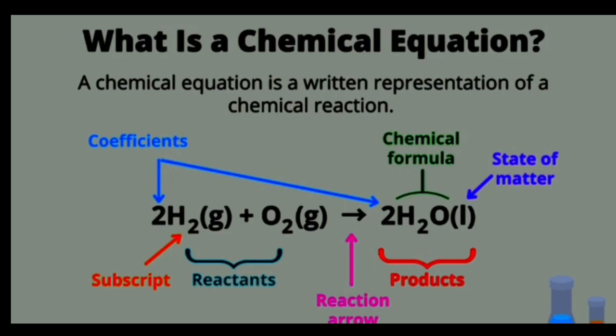What is a chemical equation? A chemical equation is a written representation of a chemical reaction in symbolic form. For example, H₂ (gas) plus O₂ (gas) makes H₂O (liquid). Here '2' in H₂ is a subscript, and the number before H₂ is a coefficient. The arrow symbol separates the reactants on the left from the products on the right.